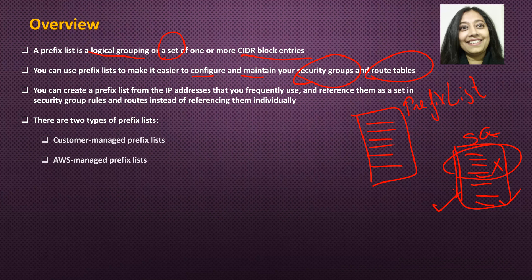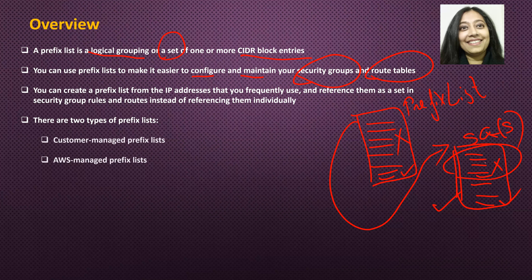But instead of doing that, let's say if you had a prefix list which already contained a list of IP addresses, and you reference this list in your security group. In that case, let's say if something modified — one of the IP addresses was removed, a new IP address was added — all that you had to do was change this prefix list. And that change will be referenced in your security group, especially if there are multiple security groups. So if you have the same list of IP addresses used across multiple security groups, then create a prefix list, so that way you have one single place where you can make the change. And if you change that, all the security groups using this prefix list get automatically updated because they are referencing this particular prefix list.